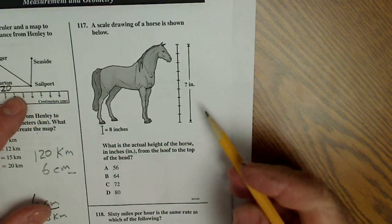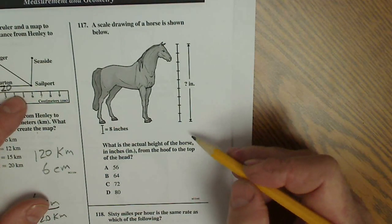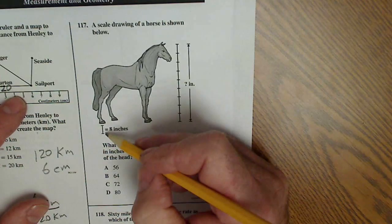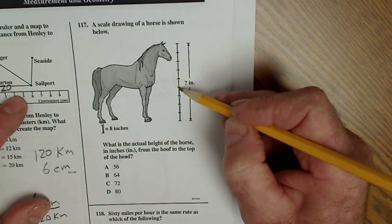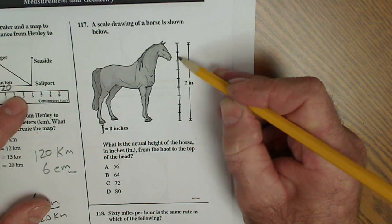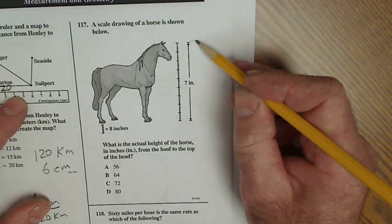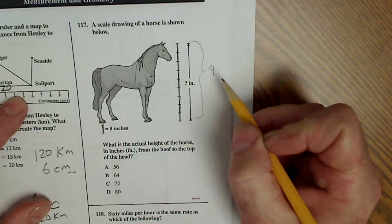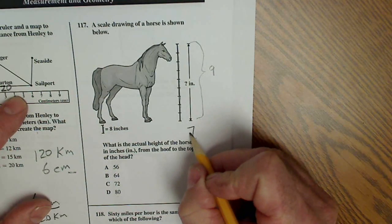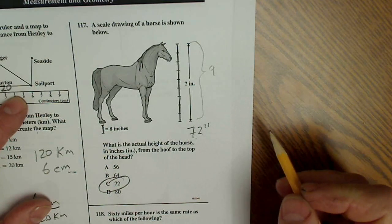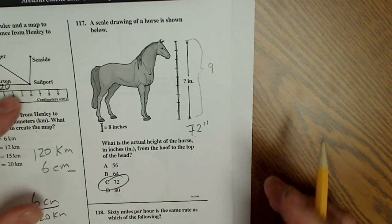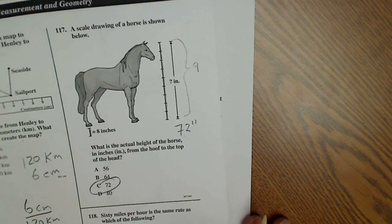There's another problem on measurement and scale. What is the actual height of the horse? Well, if this is eight inches, I have one, two, three, four, five, six, seven, eight, nine. I have nine of those marks. Each mark is eight inches. So that gives me 72 inches. Again, marking up the test as much as I can. There it is.